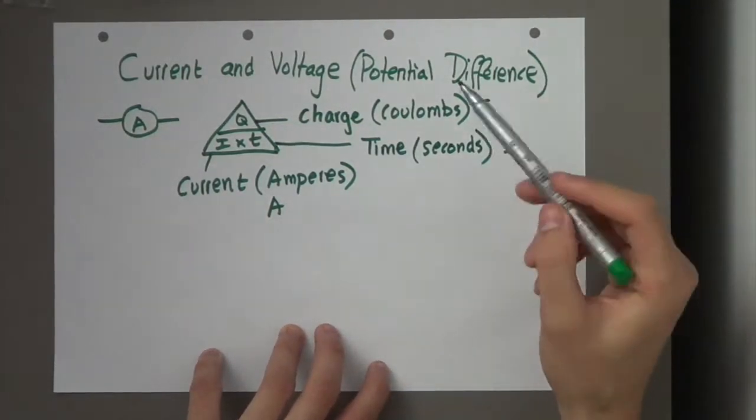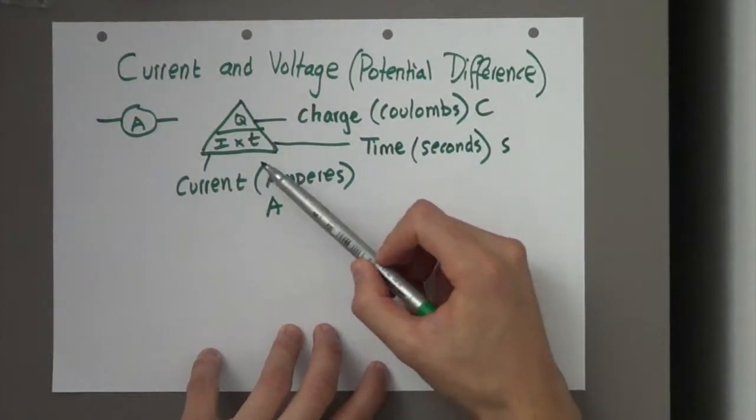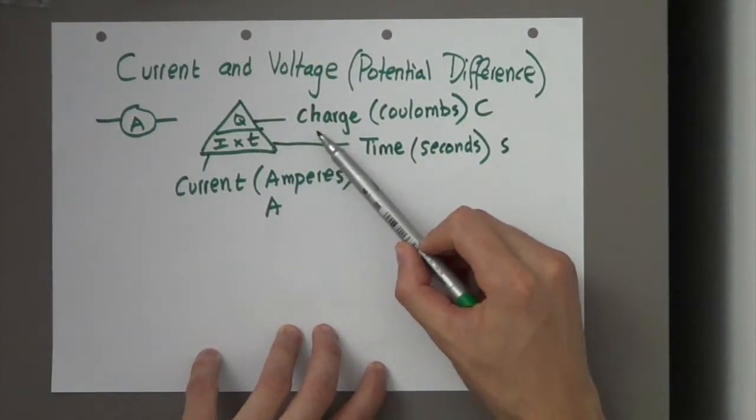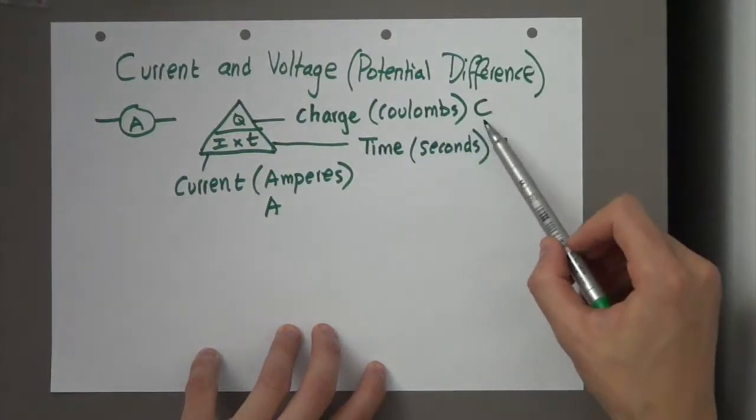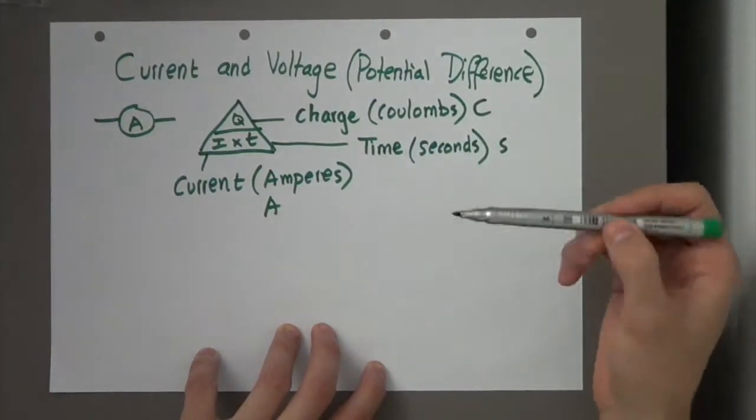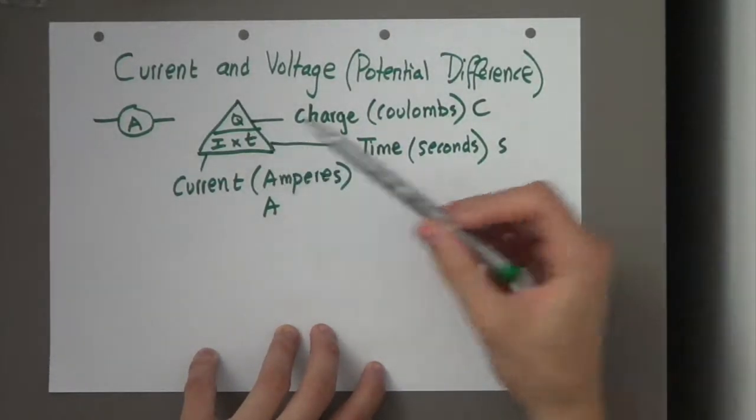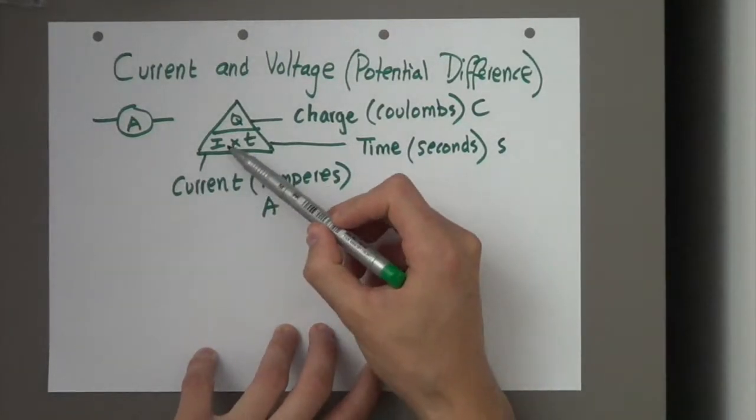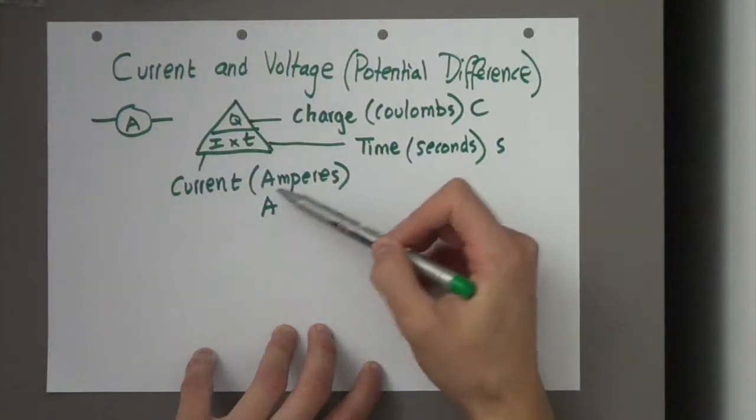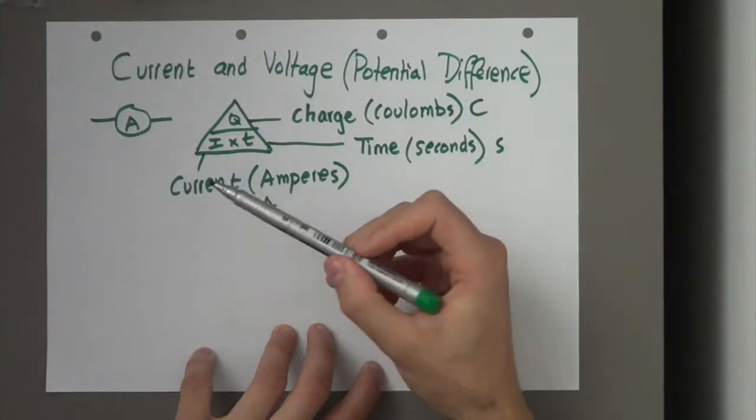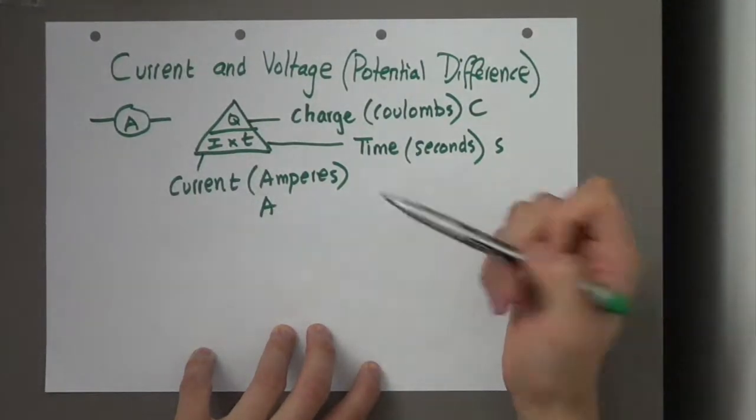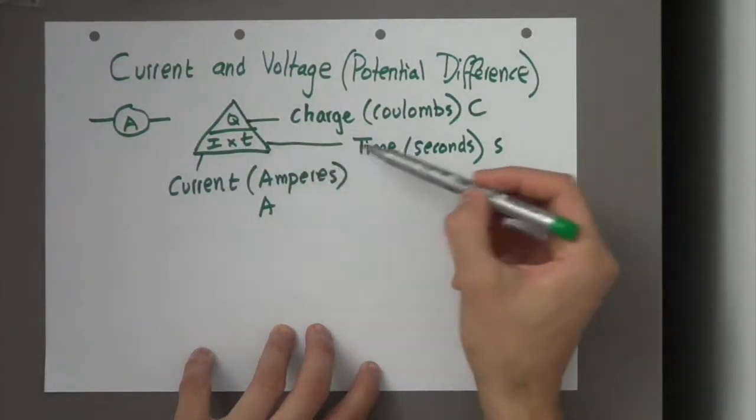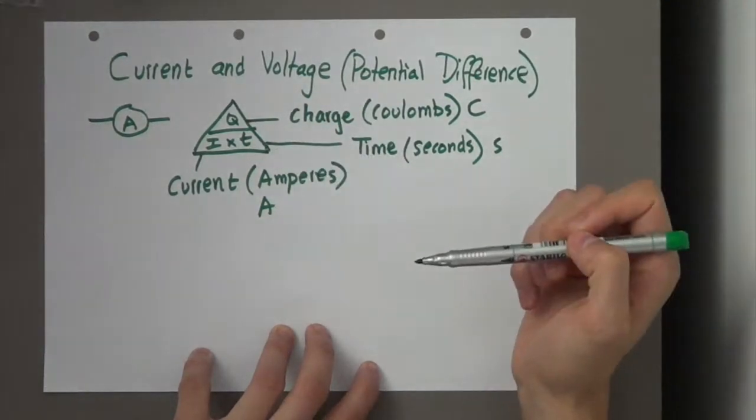First thing to be aware of: notice the symbol Q is not present in this word or this word. So, it's just something you've just got to learn, that Q stands for charge. Likewise, with current, the I is not present in any of these words here. So, you just have to learn that I stands for current. Time, T, a bit easier, because there's a T here, and there's a T there.